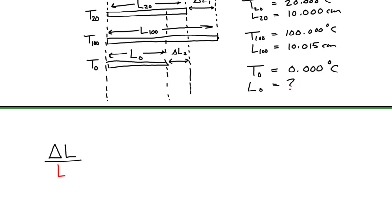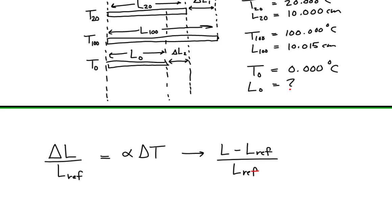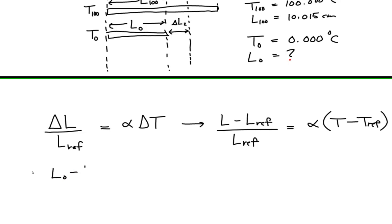So let's find the length of the rod at 0 degrees Celsius. We know that the fractional change in length of a material is directly proportional to its temperature, where the difference in length is relative to a reference length at a reference temperature. To find the length at 0 degrees Celsius, we will write the fractional change in length with the rod's length at 20 degrees taken to be our reference length at the reference temperature of 20 degrees Celsius.